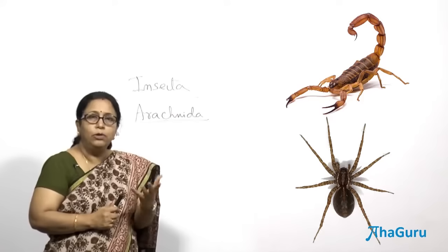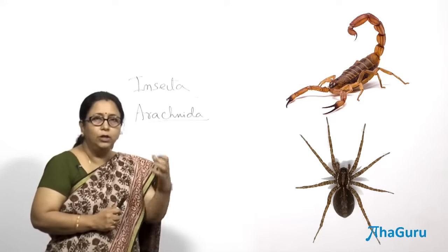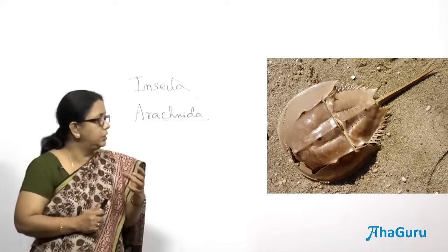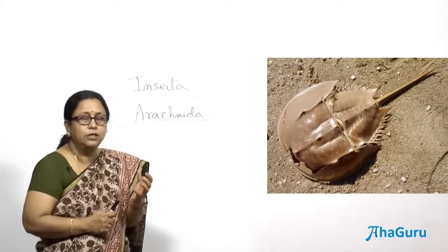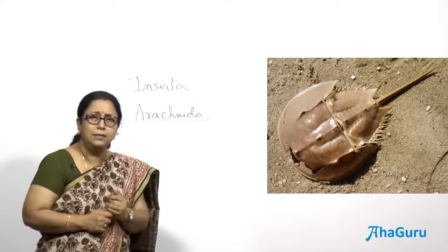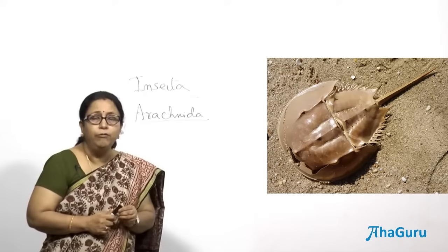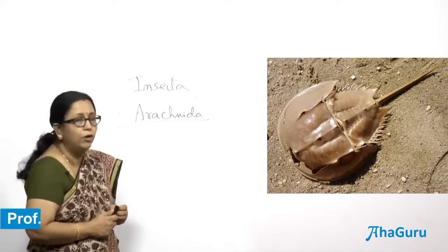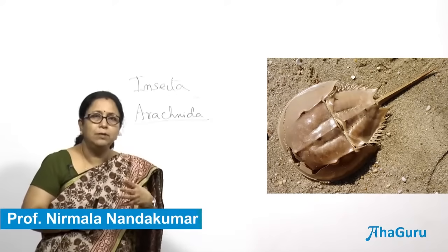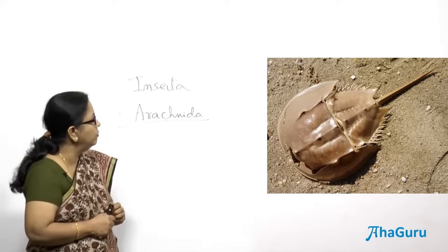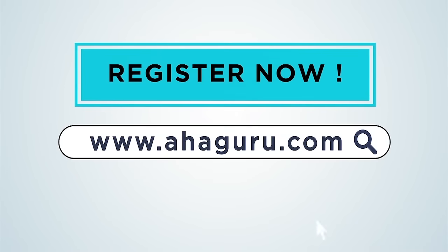One special animal in arthropoda is the king crab, or Limulus, which is considered a living fossil. It has a very big, hard carapace and respires with the help of book gills. As seen in the picture, it is known as the king crab. A living fossil is an animal that has not changed over millions of years.